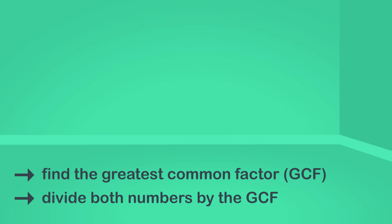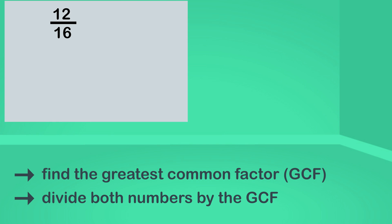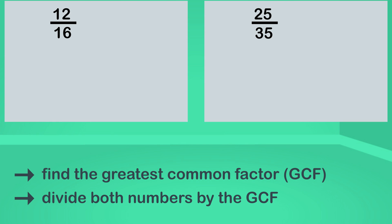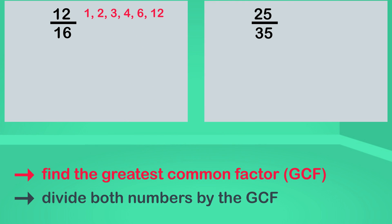Let's have a go together at simplifying the following two fractions. We'll start with this one: twelve-sixteenths. The factors of twelve are one, two, three, four, six, and twelve.